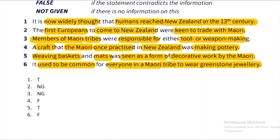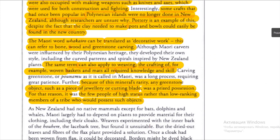The sixth statement is: 'It used to be common for everyone in a Maori tribe to wear greenstone jewelry.' This is FALSE. You need to locate 'jewelry' in the third paragraph. The third paragraph explains that because greenstone was rare, any object made of it was a prized possession. Such rare objects were owned only by the few people of high status, rather than low-ranking members of a tribe. That's all for this session — I hope you enjoyed learning. Thanks for watching.